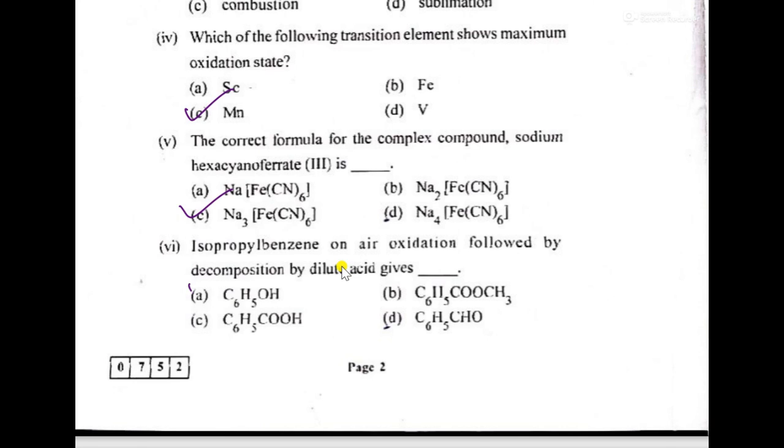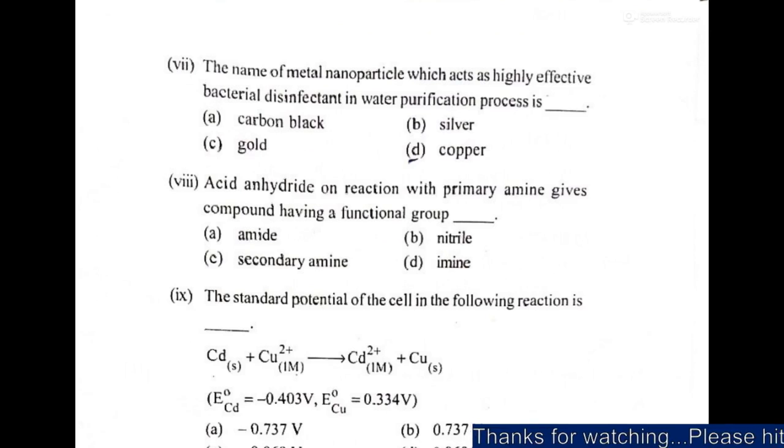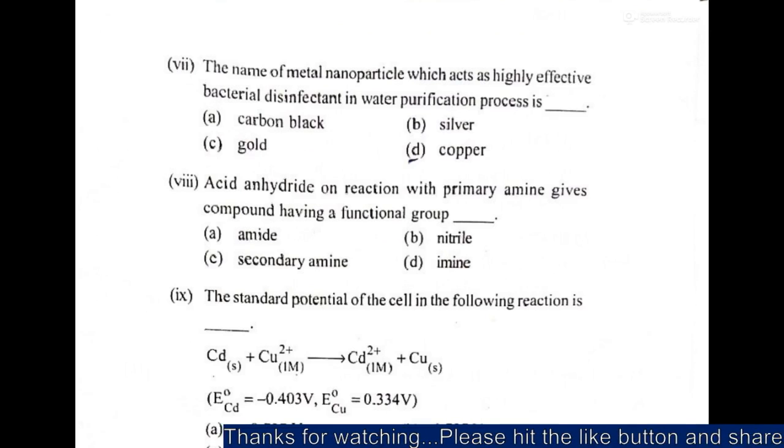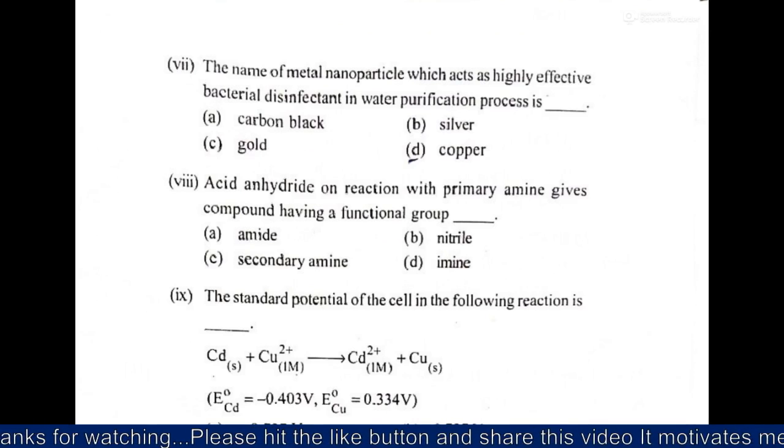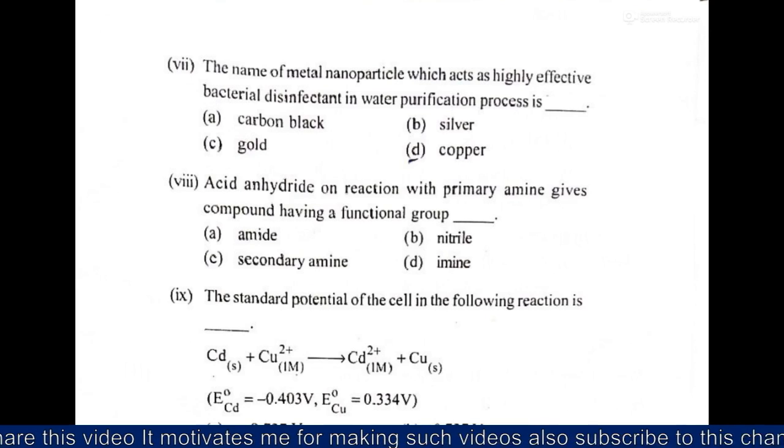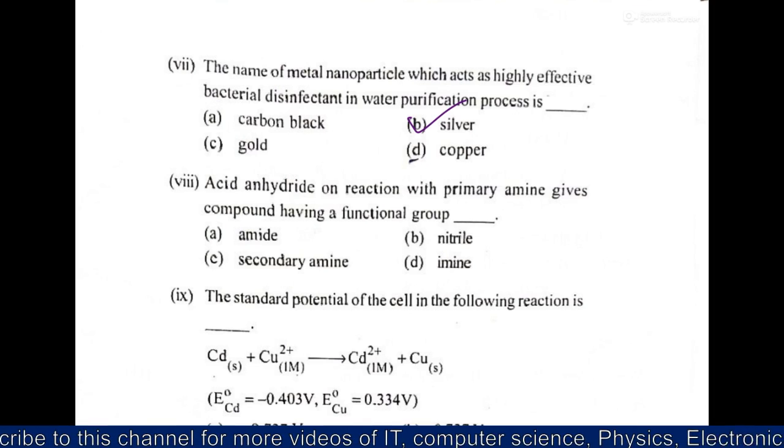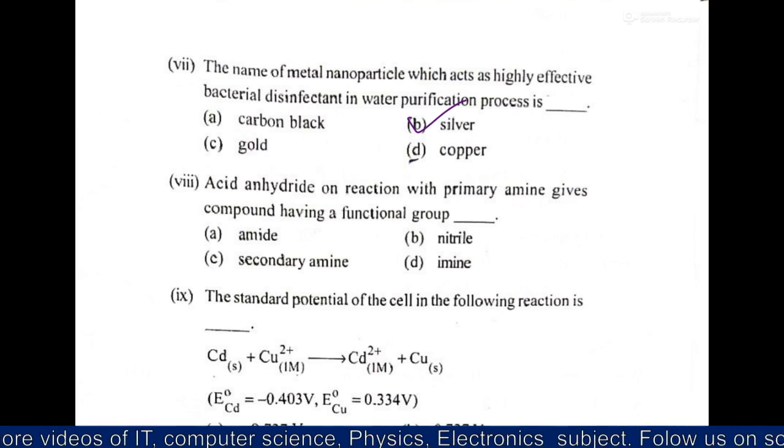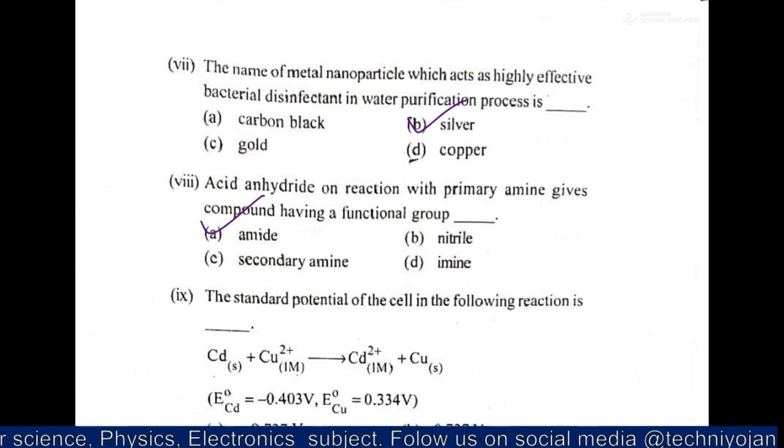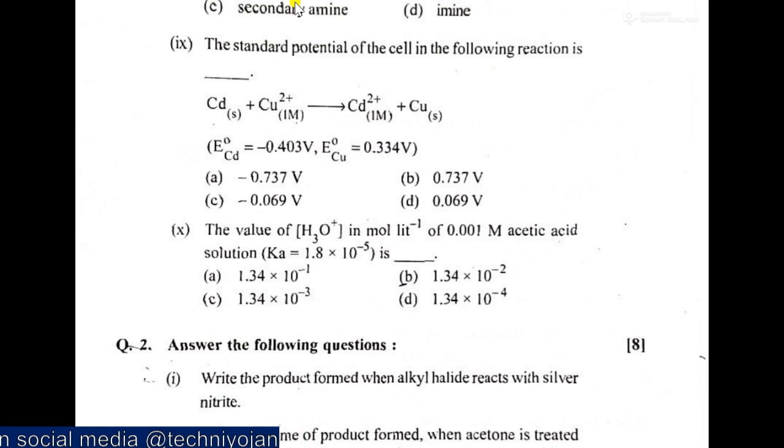The seventh one: the name of the metal nanoparticle which acts as highly effective bacterial disinfectant in water purification process, its answer is silver. Then acid anhydride on reaction with primary amine gives compound having a functional group amine. Then the ninth one, the standard potential of the cell is that given the reaction, particular reaction's answer is B.